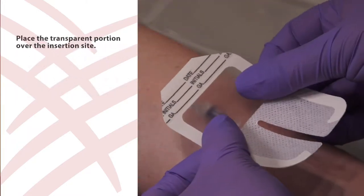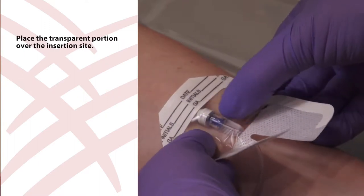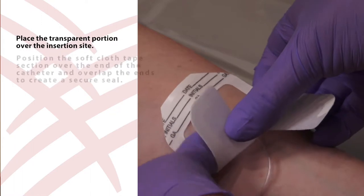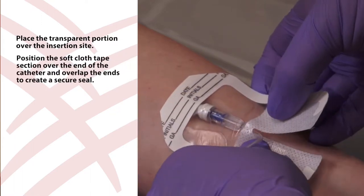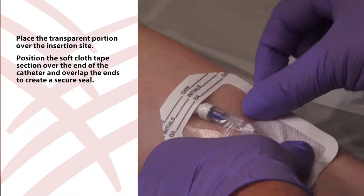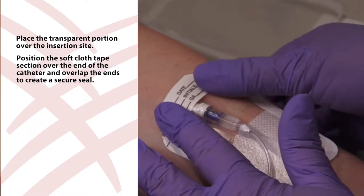Place the dressing over the catheter so that the transparent portion is over the insertion site. Position the soft cloth tape section over the end of the catheter. Overlap each side of the soft cloth tape underneath the port hub to create a secure seal.